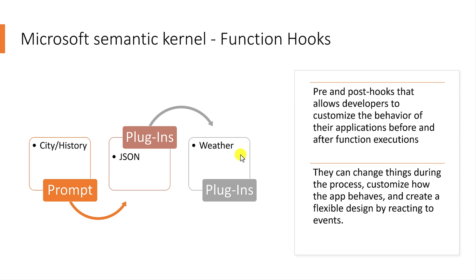Now we are going to introduce function hooks, or pre and post hooks. It helps us to customize the behavior of the application before and after function execution. This hook allows us to, during the process, customize how the app behaves and create a flexible design by reacting to the events.